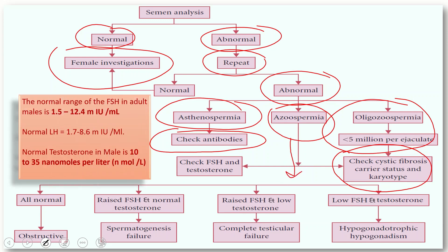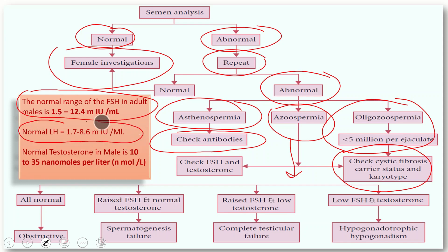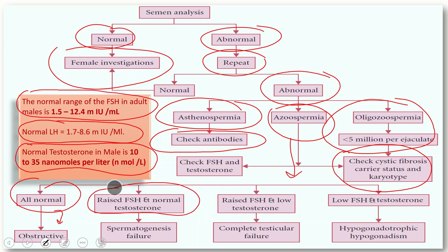The normal range of FSH in adult males is 1.5 to 12.4 mIU/ml, and for LH it is 1.7 to 8.6 mIU/ml. Normal testosterone in males is 10 to 35 nmol/L. If all hormones are in the normal range, there may be an obstructive cause of azoospermia. If FSH is raised but testosterone is normal, that indicates spermatogenesis failure. If FSH is raised and testosterone is low, that indicates complete testicular failure. If both FSH and testosterone are low, that indicates hypogonadotrophic hypogonadism.